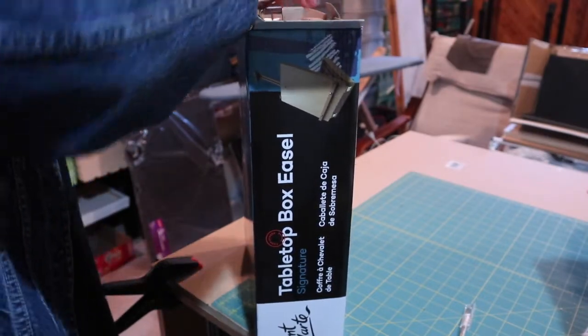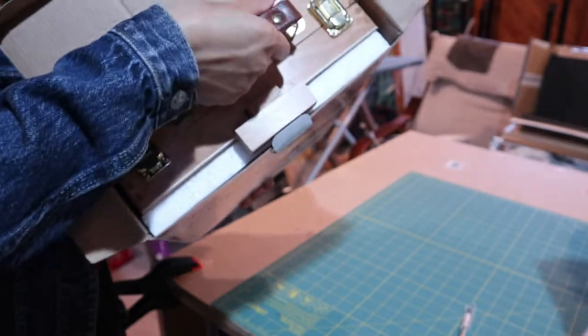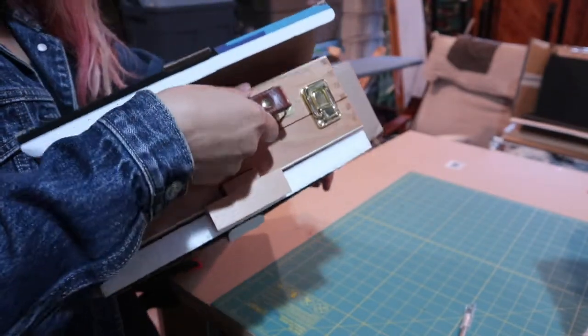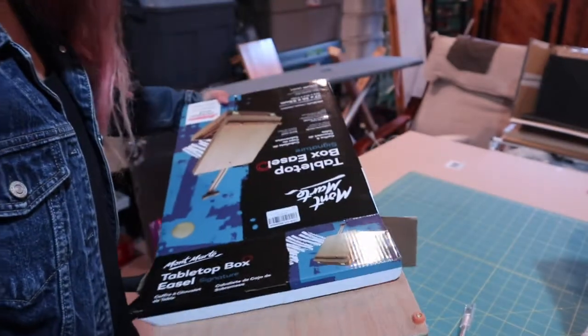And also in that video of Jeremy Mann, his plein air kit is so small, just basically two cigar boxes—one with the paints and one to hold a small white canvases that he does—so I thought this should be enough for me.